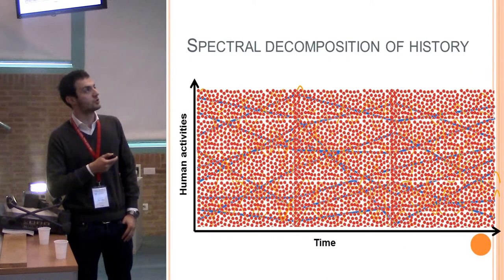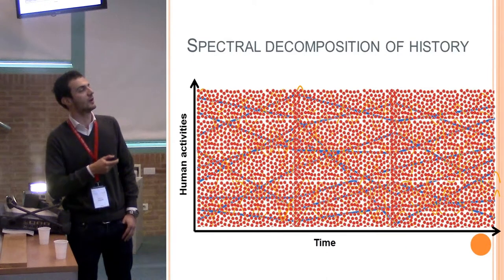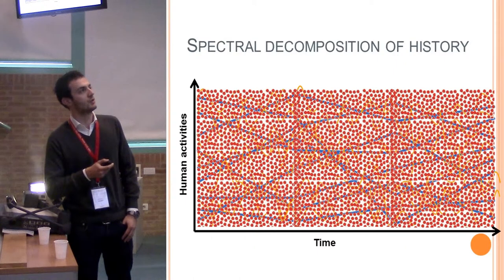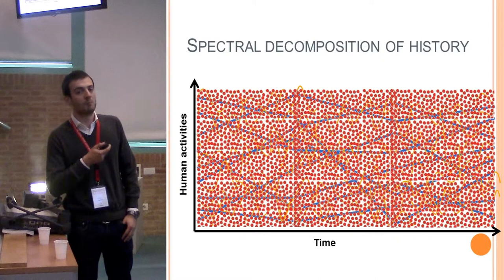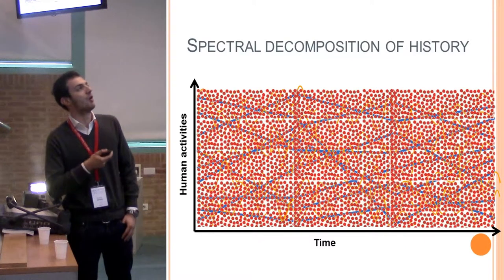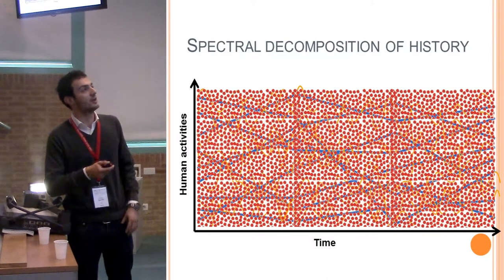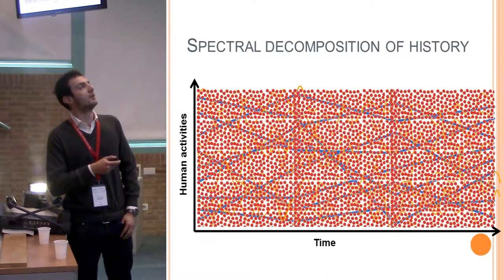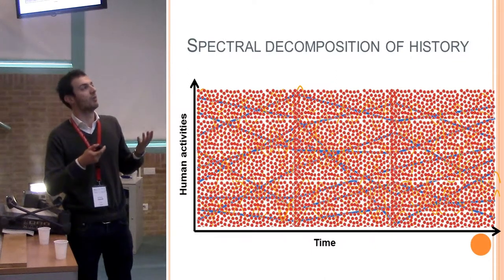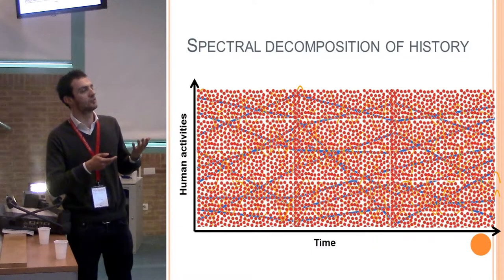I will start from the short duration of history, represented by those red dots. It concerns événementielle history — the events. For example, the birth of an important person, a war, the event that triggers a war or a battle. History is full of events, but those are obviously unpredictable, and when we do historical modeling, that's not what we try to simulate.